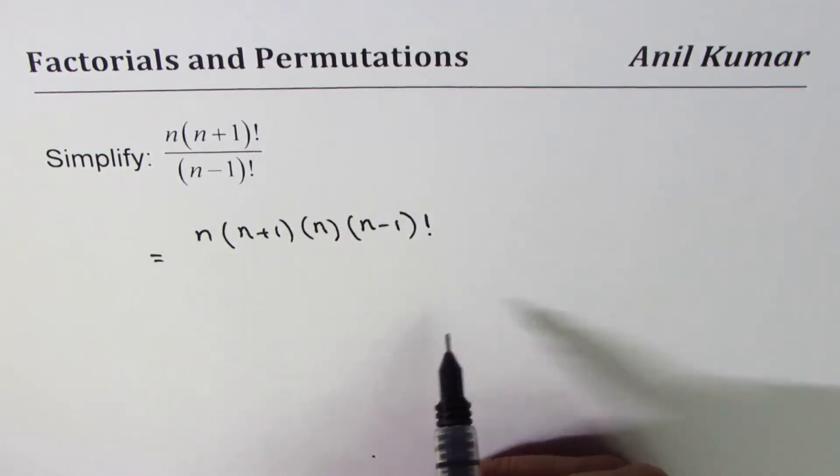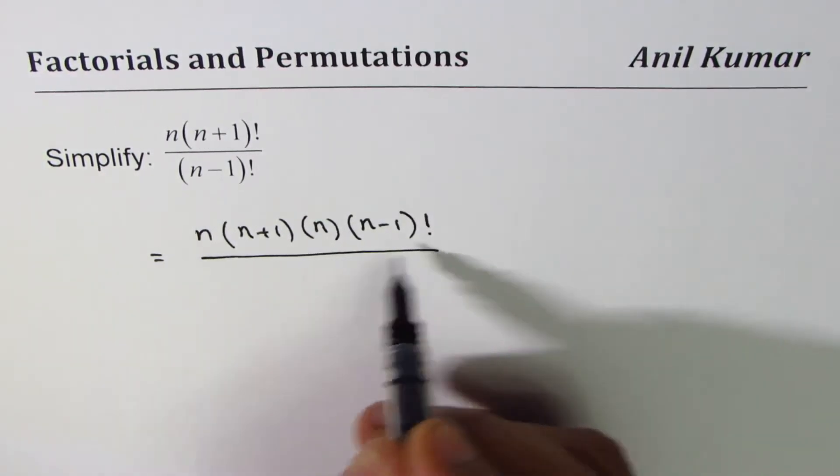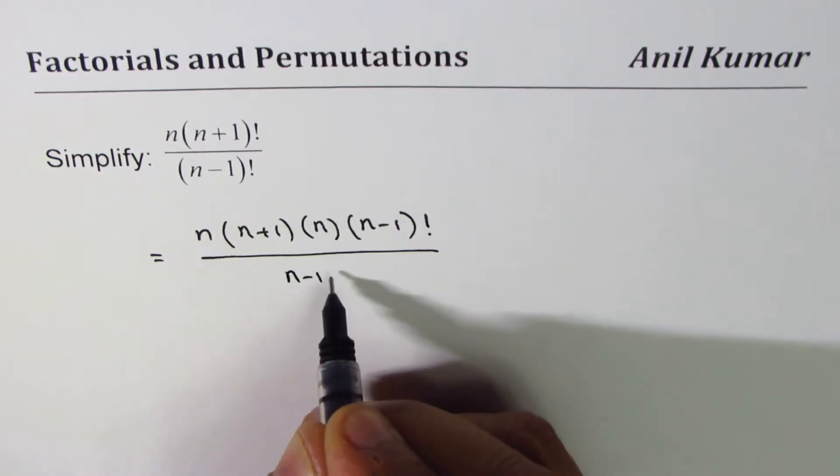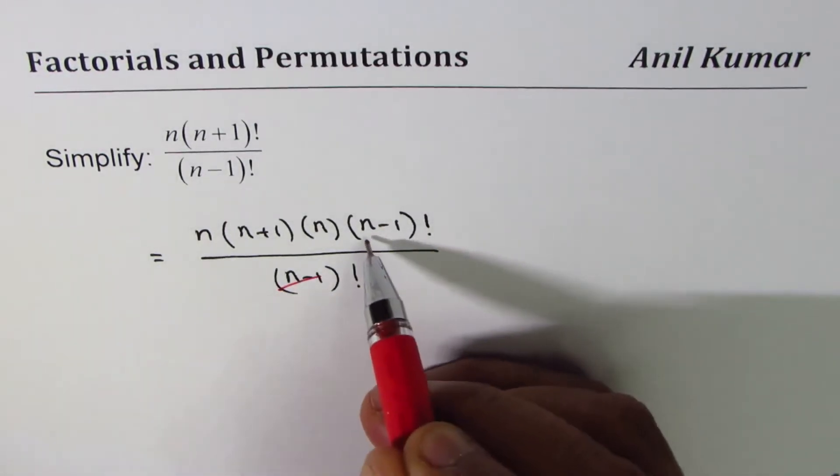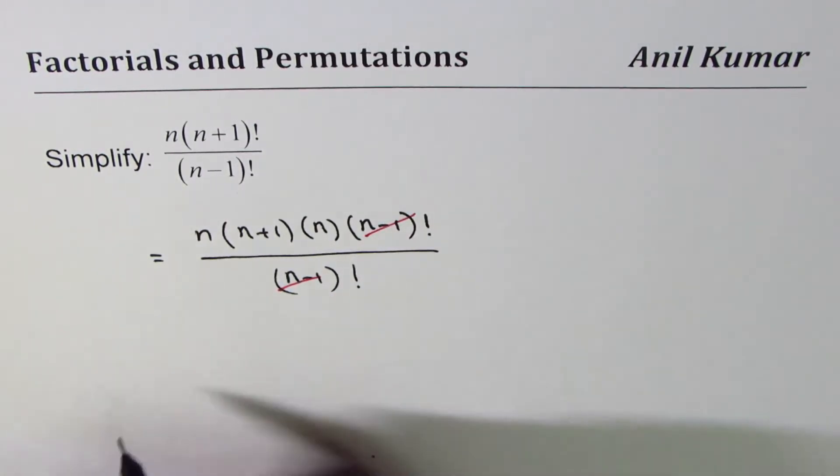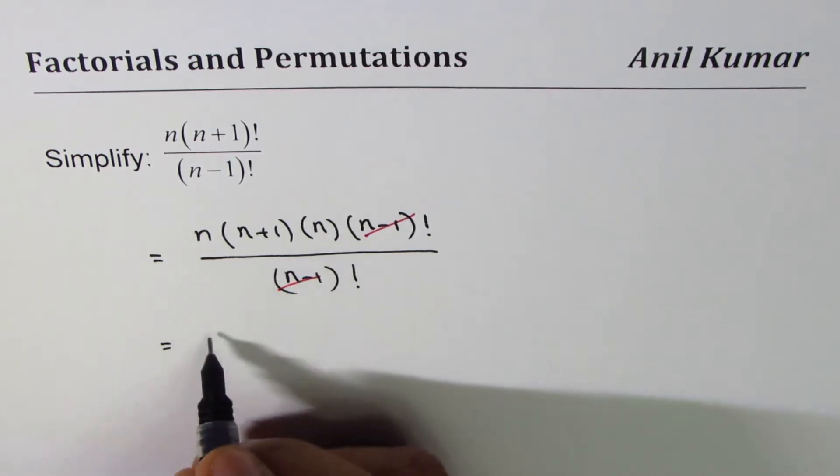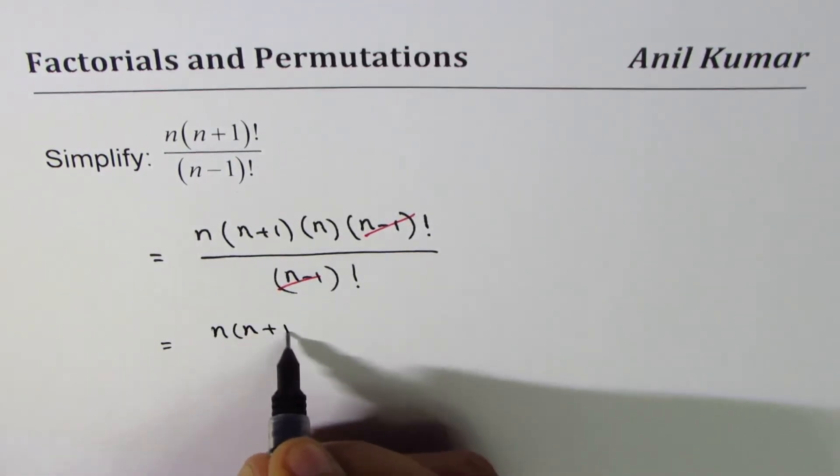The denominator is (n-1)!. So from here you can see that (n-1)! in the numerator and denominator cancels out. So we are left with n times (n+1) times n.